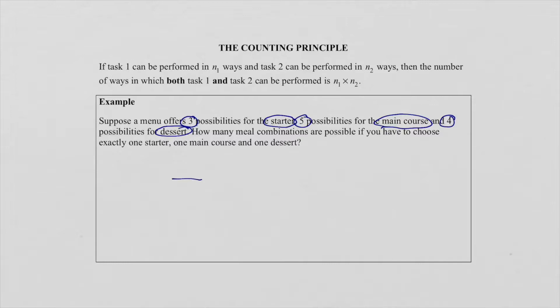We represent these tasks with a little line. So task number one is to select a starter. As you can see, three possibilities for a starter. Task two is to select a main course, and there are five possibilities for a main course. And task three is to select a dessert. Remember, only one starter, one main course and one dessert are supposed to be selected. So for desserts, four possibilities.